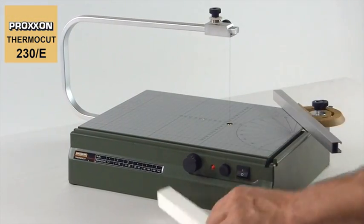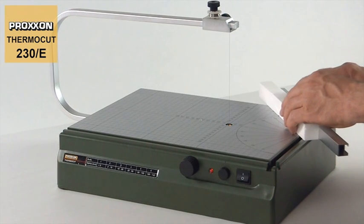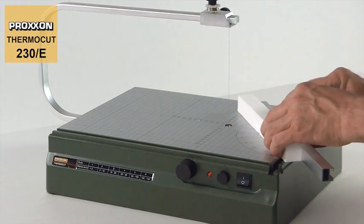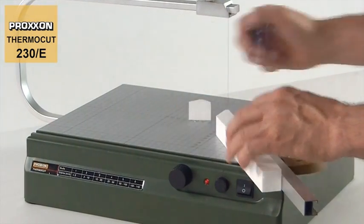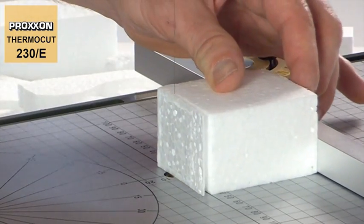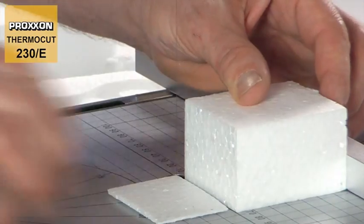And don't worry, the integrated isolation transformer and class 2 protective insulation ensure that the ThermoCut 230E is absolutely safe and a hot wire cuts with a completely safe voltage of 10V.